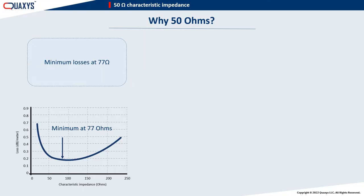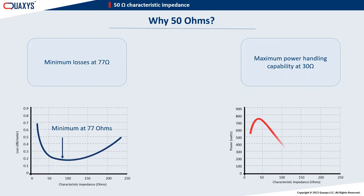We can also show that a characteristic impedance of 30 ohms maximizes the power handling capability. This plot shows how much power a coax cable can handle at each characteristic impedance, and we see that 30 ohms maximizes the power handling capability.